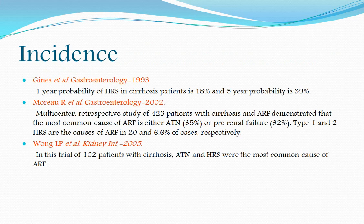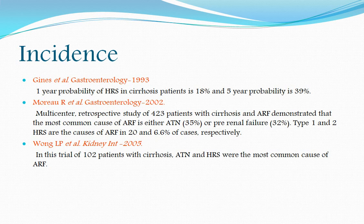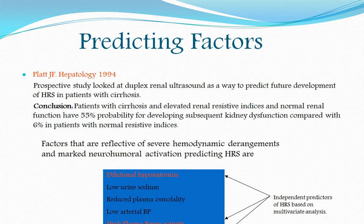The one-year probability of HRS in cirrhosis patients is about 18%, and the five-year probability is about 40%. A multi-center retrospective study published in Gastroenterology 2002, involving over 400 cirrhosis patients, showed the most common cause of acute renal failure was ATN in 35% of cases and pre-renal azotemia in 32%. Type 1 and Type 2 HRS accounted for about 20% and 7% respectively. A 2005 study in Kidney International of 102 cirrhosis patients similarly found ATN followed by HRS as the most common causes of renal failure.